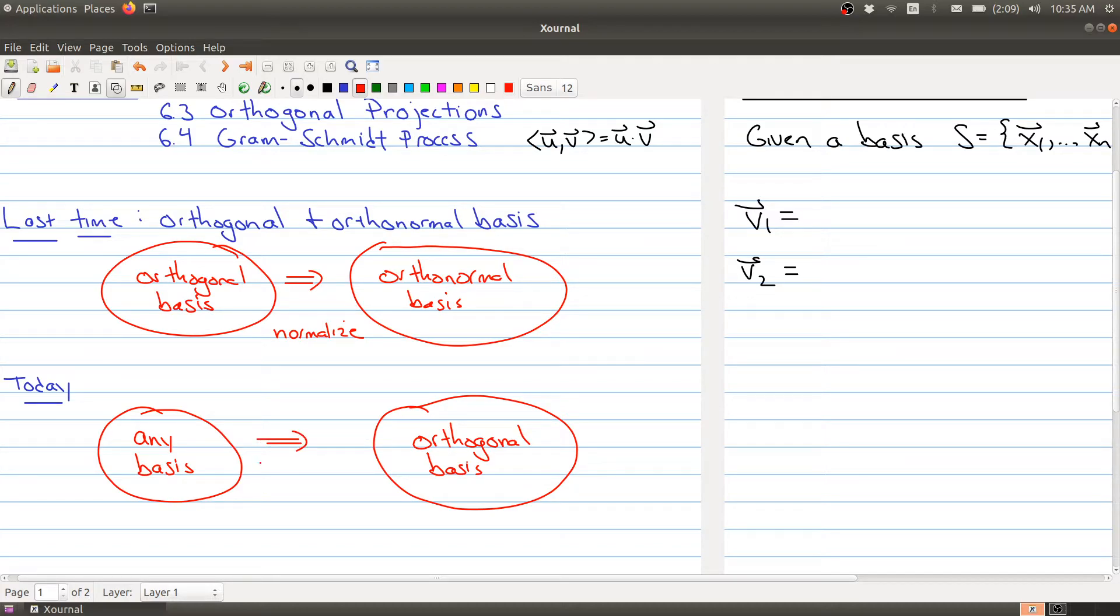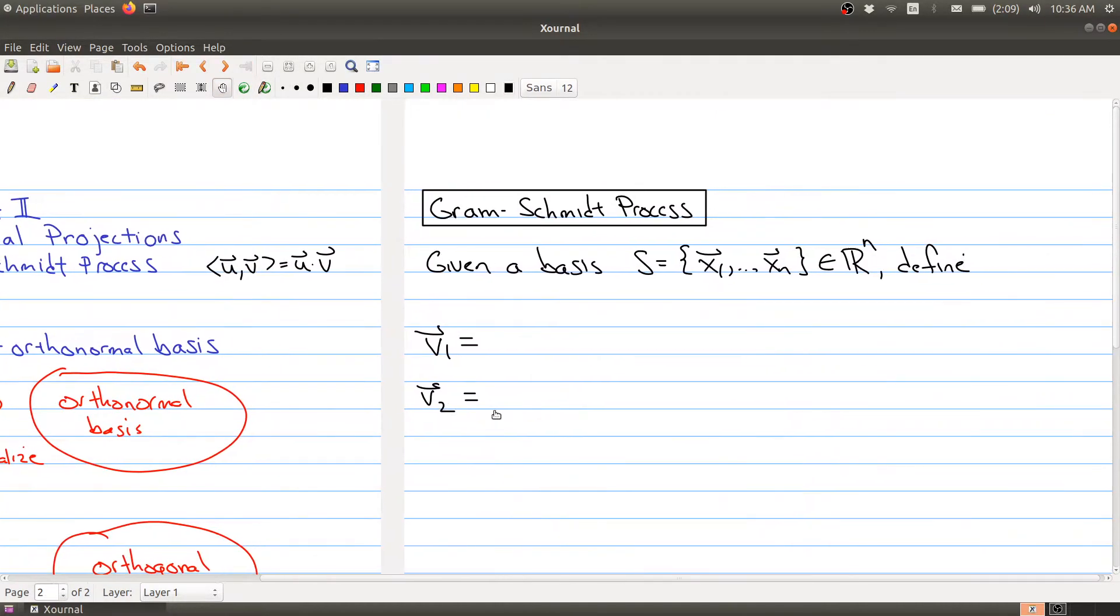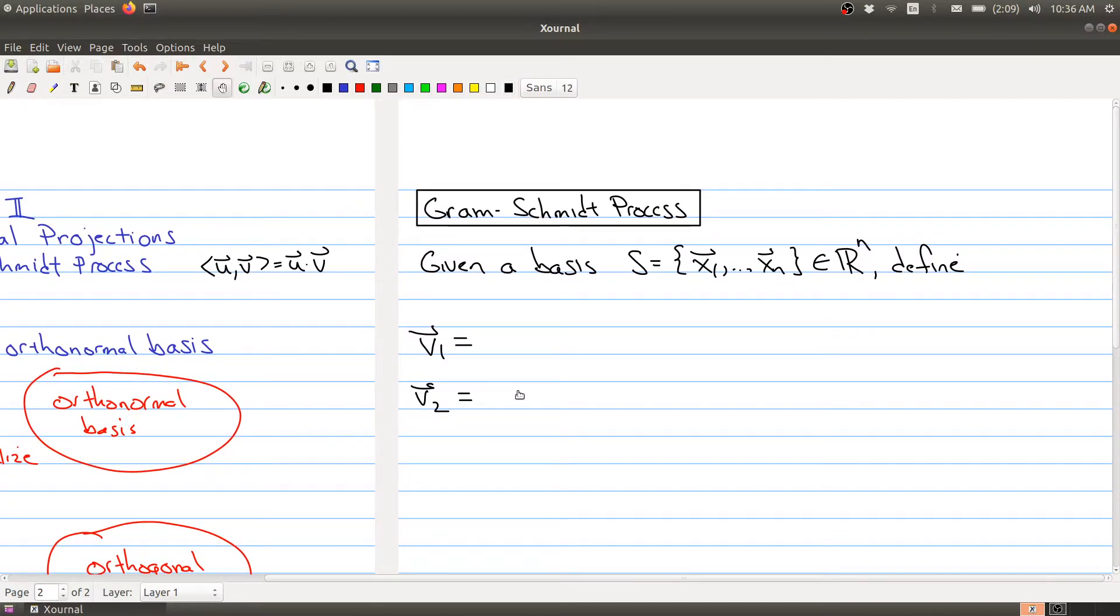And that's one way to think about exactly what the Gram-Schmidt process does is it takes something that's a basis for a vector space and turns it into an orthogonal basis. And then using what we learned from last class, we can take that orthogonal basis and turn it into an orthonormal basis. So without much further ado, let me just actually state the Gram-Schmidt process.